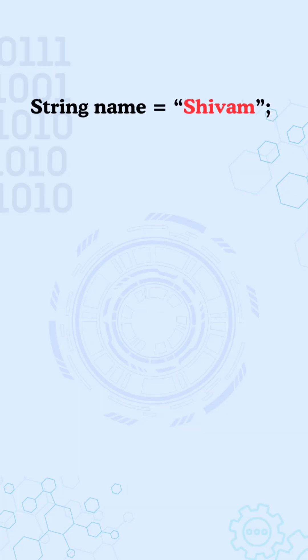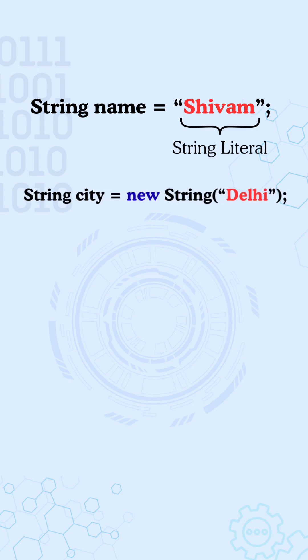Let's say you create a string like this: string name1 is equal to shivam. This is called a string literal. And if you create it like this: string city1 is equal to new string delhi, then this is called a string object.